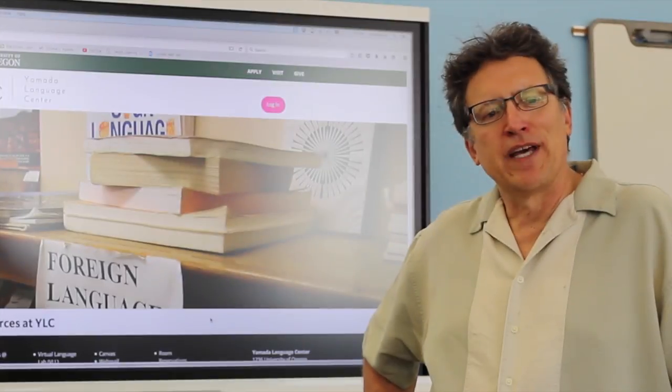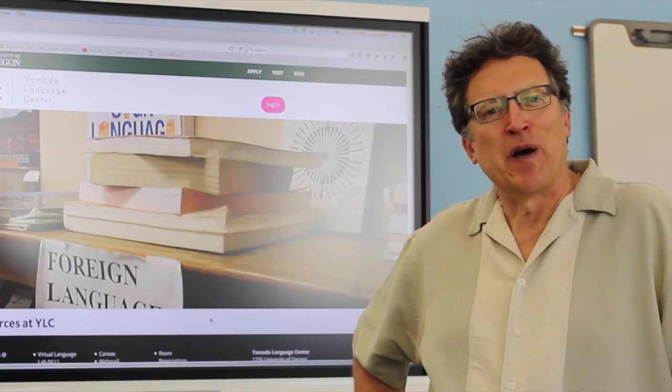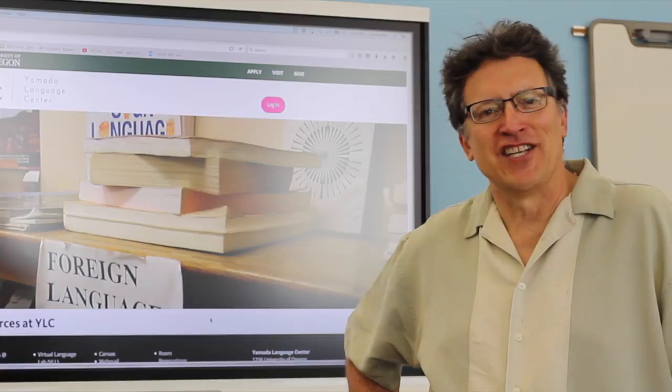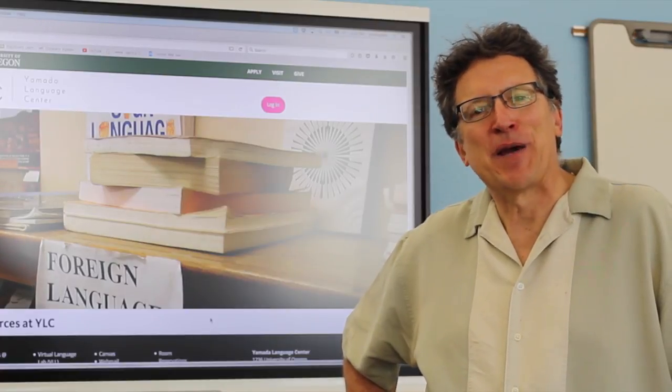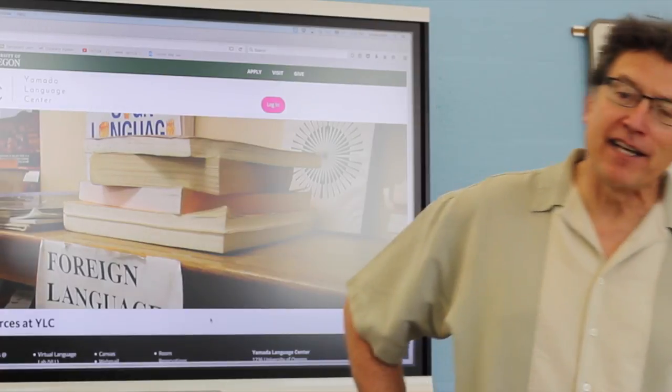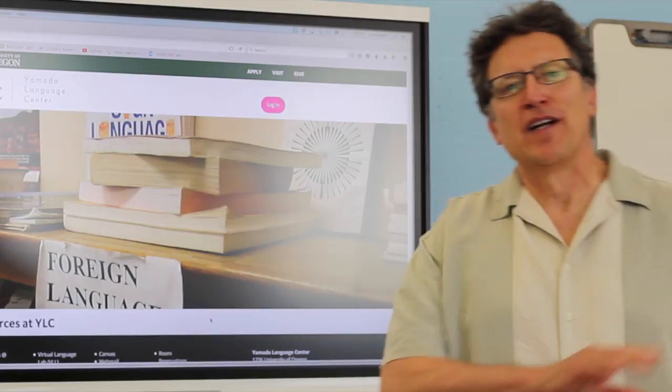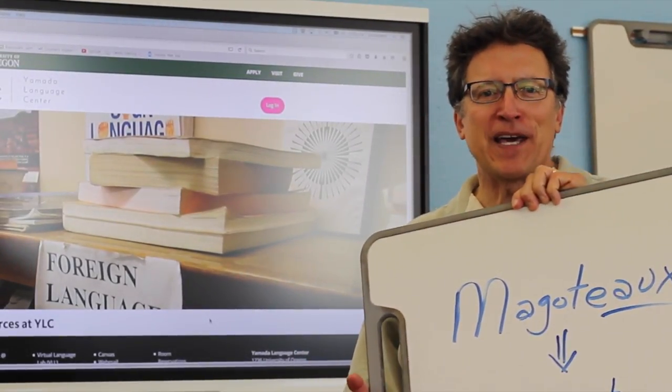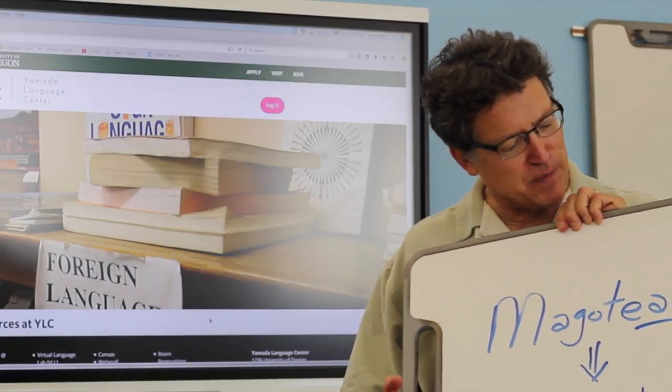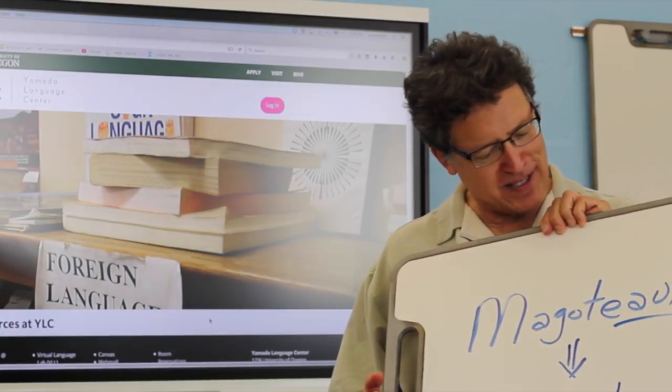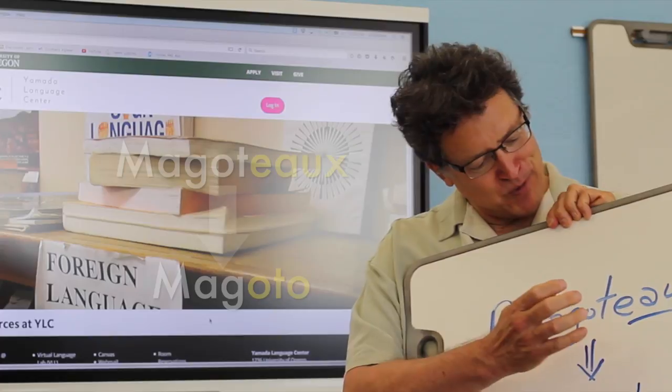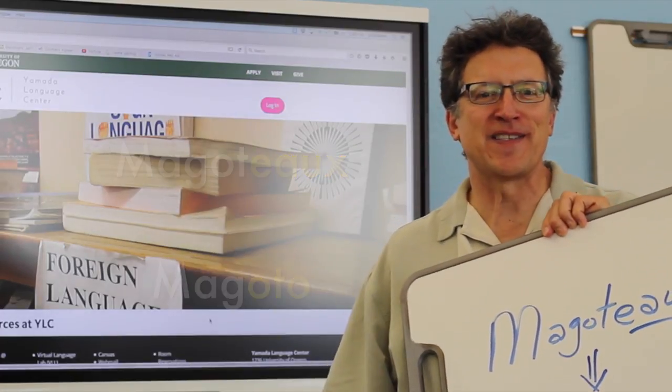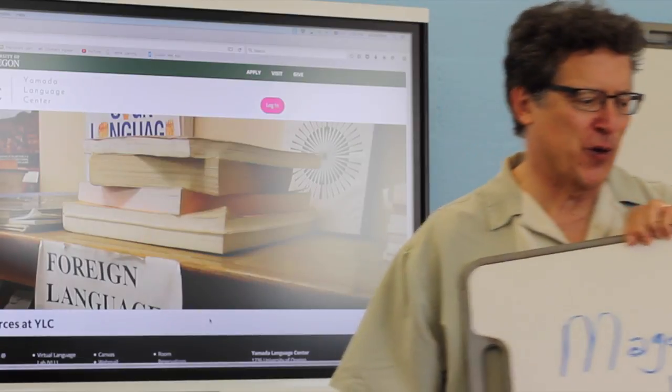When I was in seventh grade, our school was proud to offer French. It only offered French and that was okay with me because my family, like a lot of families in that school, was French. I had a great-grandfather who came through Ellis Island like so many immigrants in the early part of the 20th century. My name was once spelled differently and got anglicized, so I'm Magado with an O.